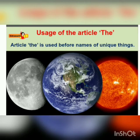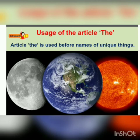Article 'THE' is used before names of unique things — things of which there is only one. The earth is only one, the sun is unique, the moon is unique. Before unique things, you have to use 'the'.